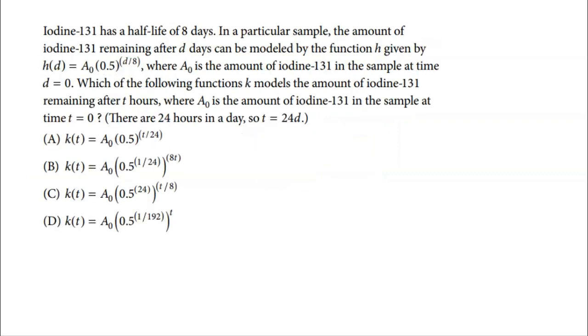Now here's another one that's very similar in a lot of ways. Iodine 131 has a half-life of eight days, which means every eight days it gets cut in half. So right away, I know my ratio is a half. That's pretty simple. And in particular sample, the amount of iodine 131 remaining after D days can be modeled by the function. Let's see here. So we have the initial amount times 0.5. That's because it's getting cut in half. And then it's D divided by eight. Now that's because every eight days is when it's going to get cut in half. So if I plug in eight, eight divided by eight is one. So it's going to get cut in half one time. Every 16 days, it's going to get cut in half twice. You get the idea.